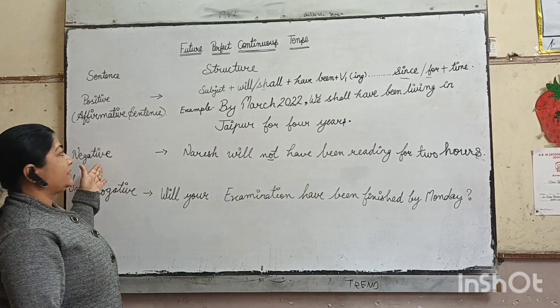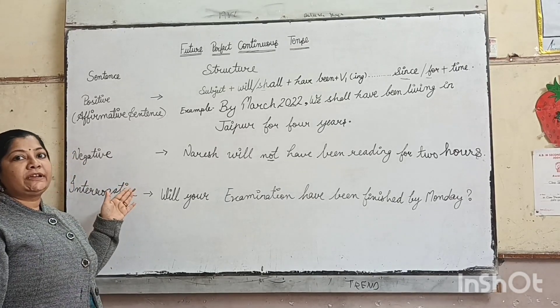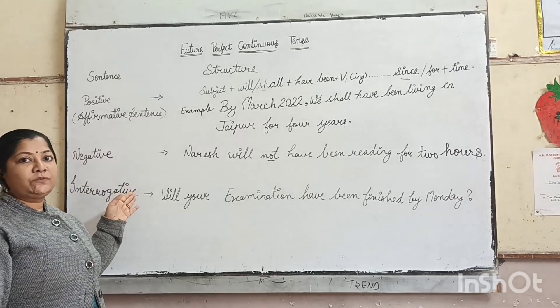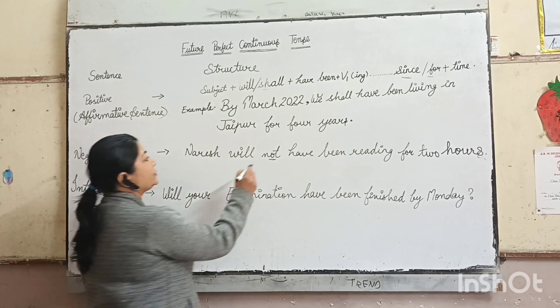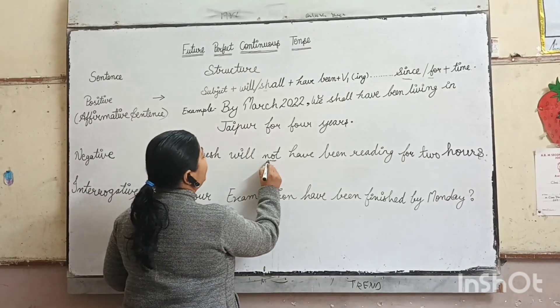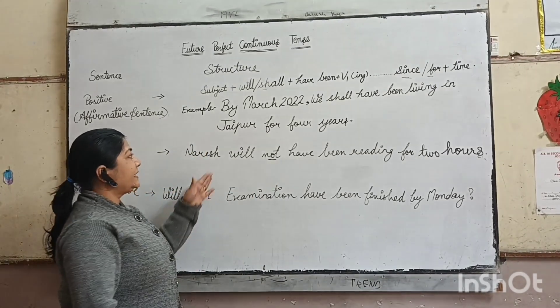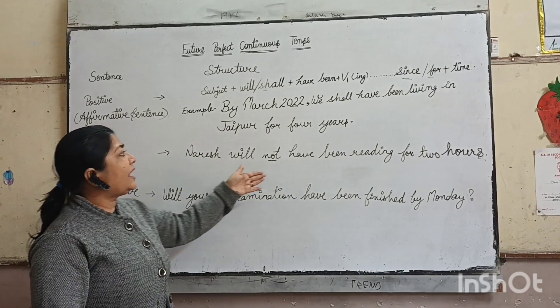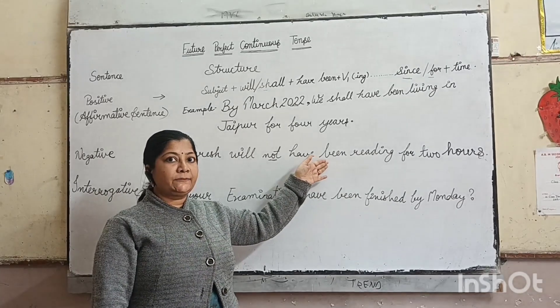Next is negative sentence. Negative sentence kya hota hai? Nankaar aatmak vaakye — jisme 'not' add ho jaata hai will or shall ke baad. Example: Naresh will not have been reading for 2 hours.